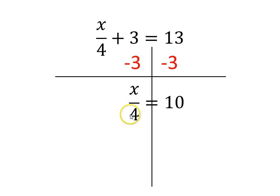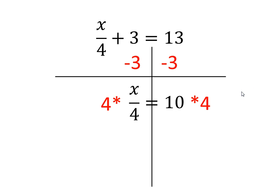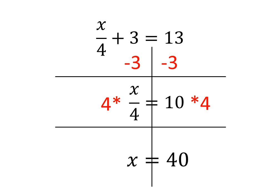Now we have x divided by 4 equals 10. The opposite of divided by 4 is multiply by 4, so I'm going to multiply by 4 on this side — the little asterisk means multiply. But what I do to one side, I do to the other, so I multiply by 4 on the right-hand side as well. On the left-hand side, the 4s cancel out — divided by 4 and times 4 are opposite operations — leaving us with just x on the left-hand side.